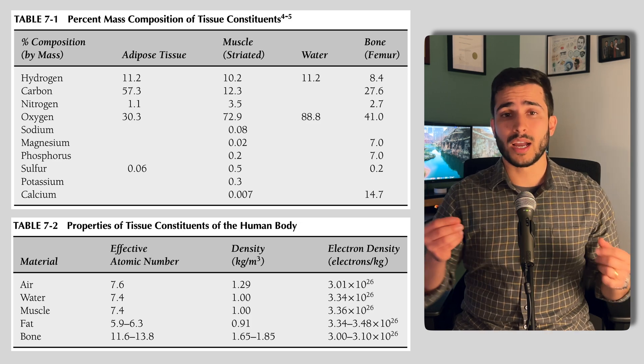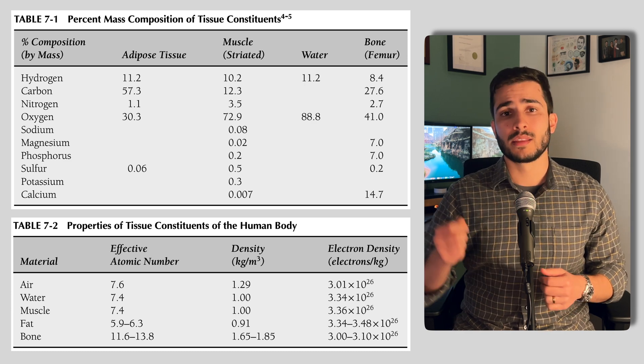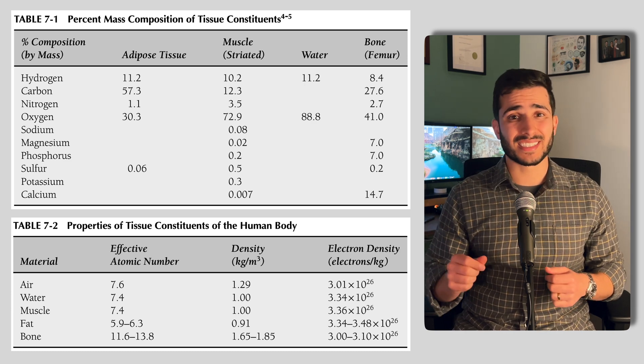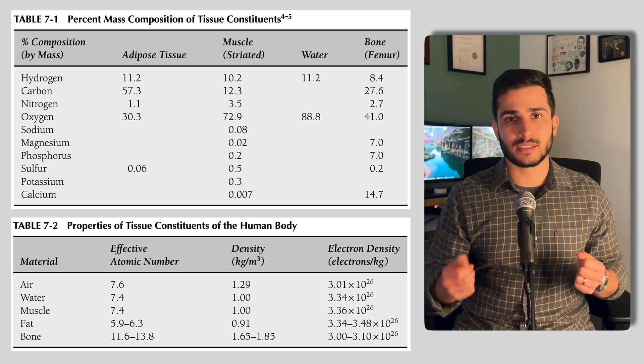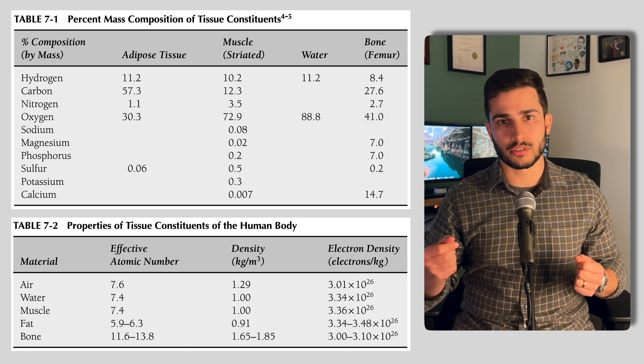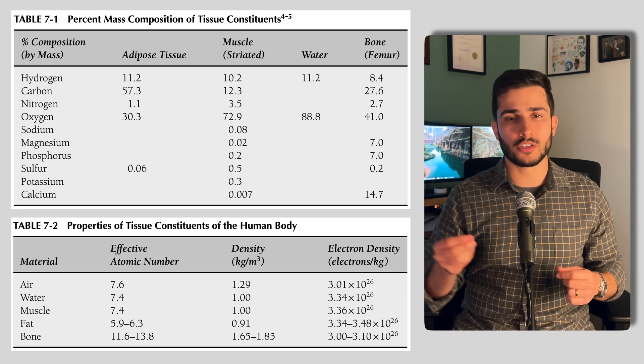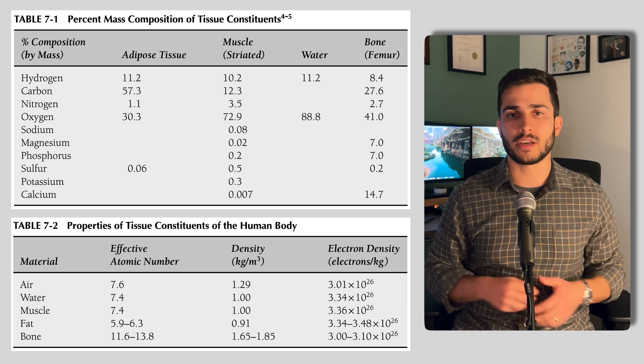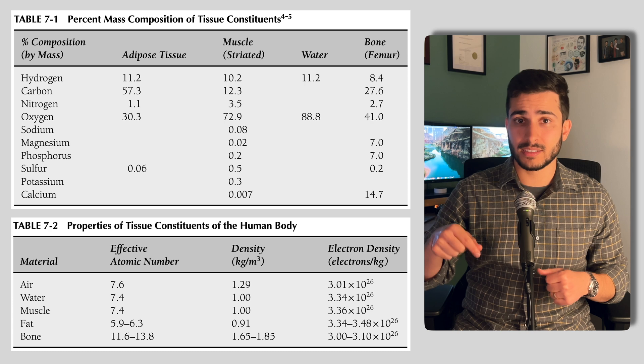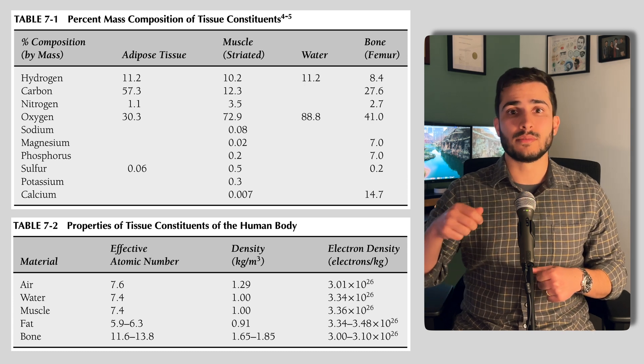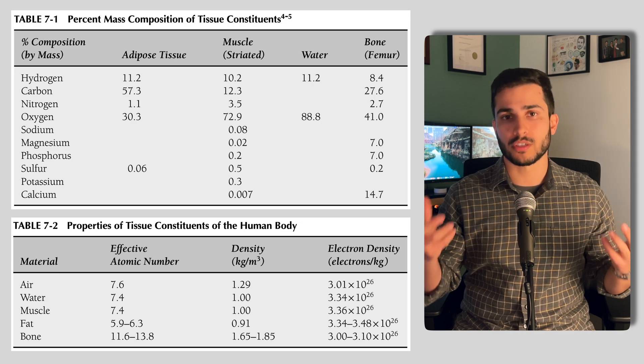Now, when we're dealing with higher energy X-rays that are primarily interacting with the Compton scattering, the probability of interactions in this case don't vary with the atomic number, but with the electron density and the attenuating material, or rather the tissue. And what's interesting is that the electron density of hydrogen is about twice that of other elements. And so because there's more hydrogen in fat than in other tissues, there's actually more Compton interactions in fat than in equal masses of bone or muscle.